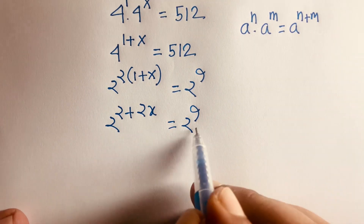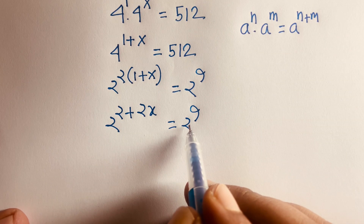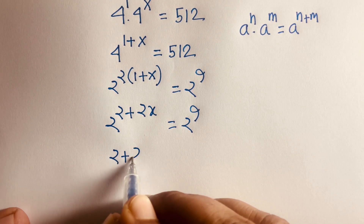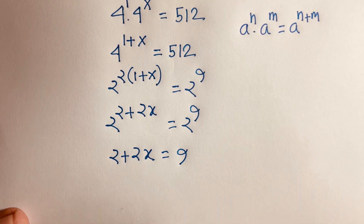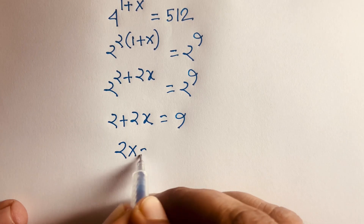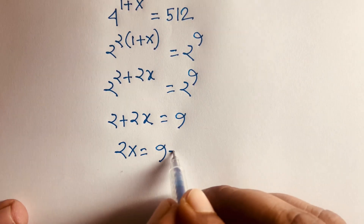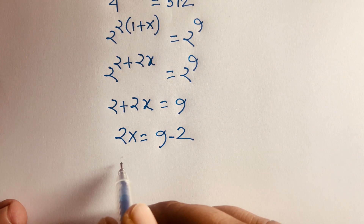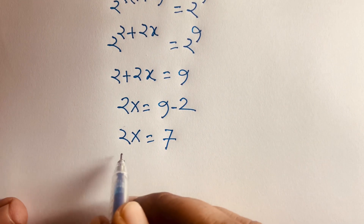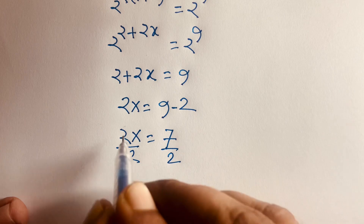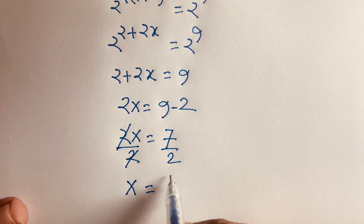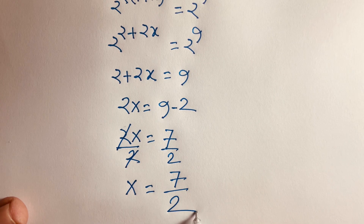The bases are the same, so according to exponential rules the exponents are equal: 2 plus 2x is equal to 9. Then 2x is equal to 9 minus 2, so 2x is equal to 7. Dividing both sides by 2, the 2 cancels and our final answer is x is equal to 7 over 2.